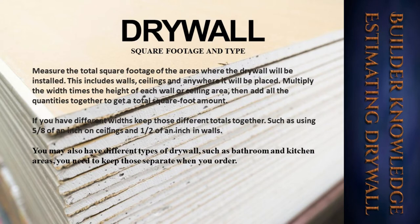This includes walls, ceilings, and anywhere it will be placed. Multiply the width times the height of each wall or ceiling area, then add all the quantities together to get a total square foot amount. If you have different widths, keep those different totals together — such as using five-eighths of an inch on ceilings and one-half inch on walls. You may also have different types of drywall, such as for bathroom and kitchen areas — keep those separate when you order.